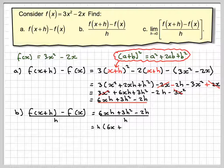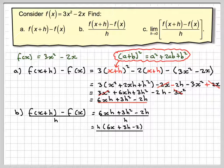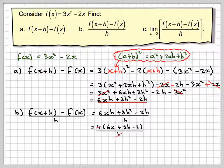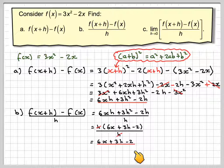Factor out the common h. Taking it out gives us h(6x + 3h - 2) divided by h. The h's cancel, leaving 6x + 3h - 2.